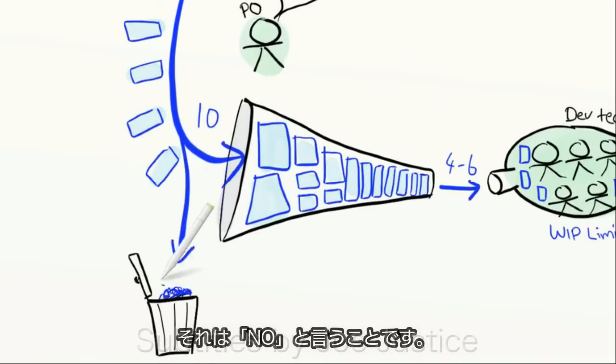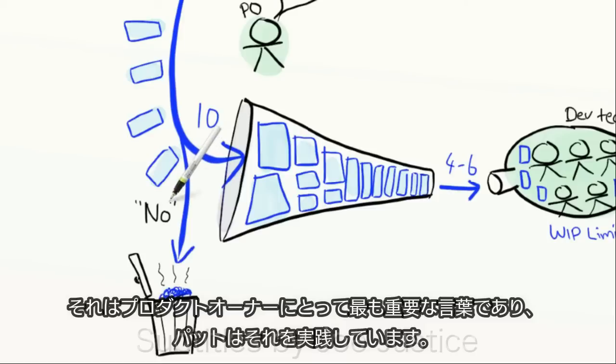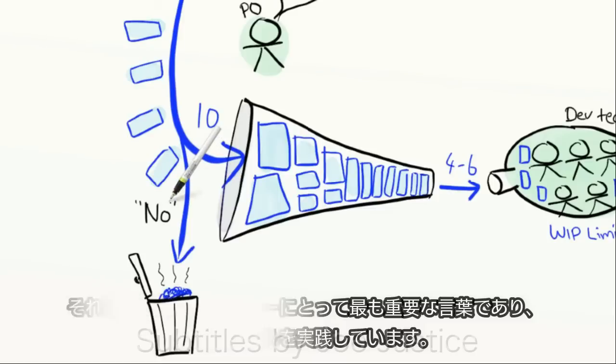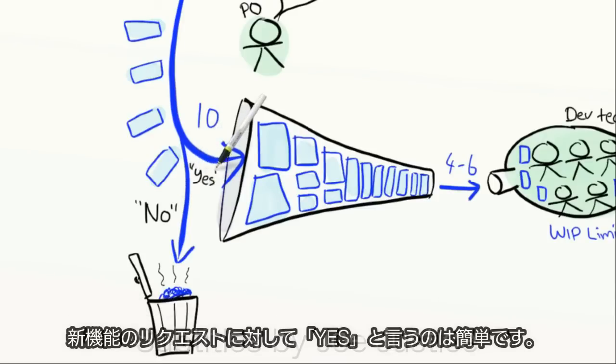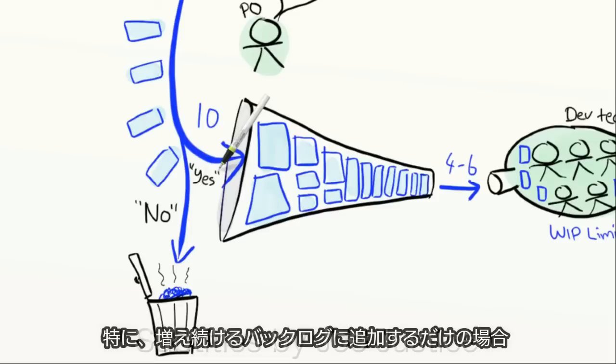So there's really only one way to stop the queue from getting out of control, and that word is no. It is the most important word for a product owner, and Pat practices it every day in front of the mirror. Saying yes to a new feature request is easy, especially if it only means adding it to an ever-growing backlog.